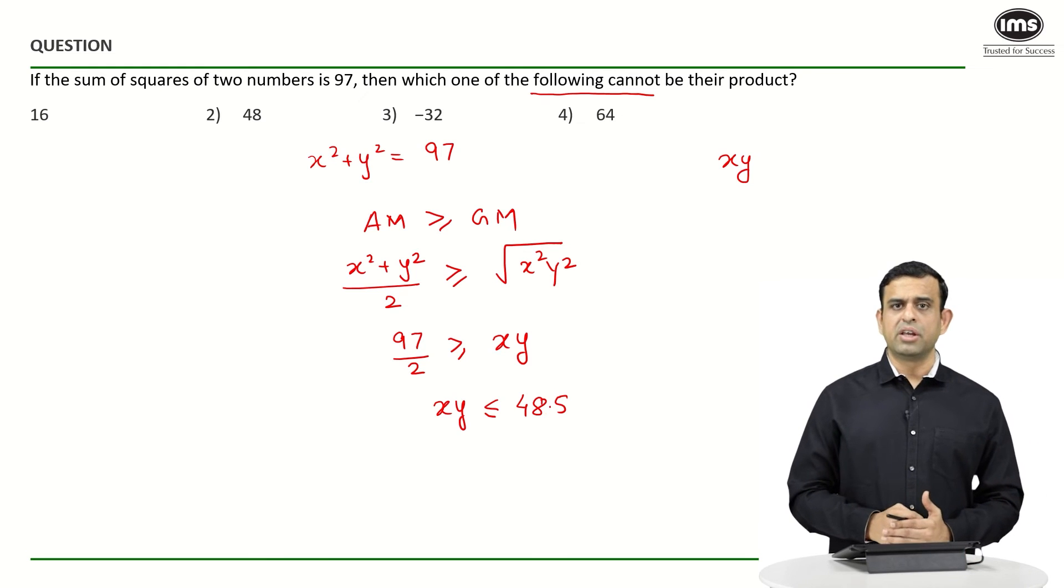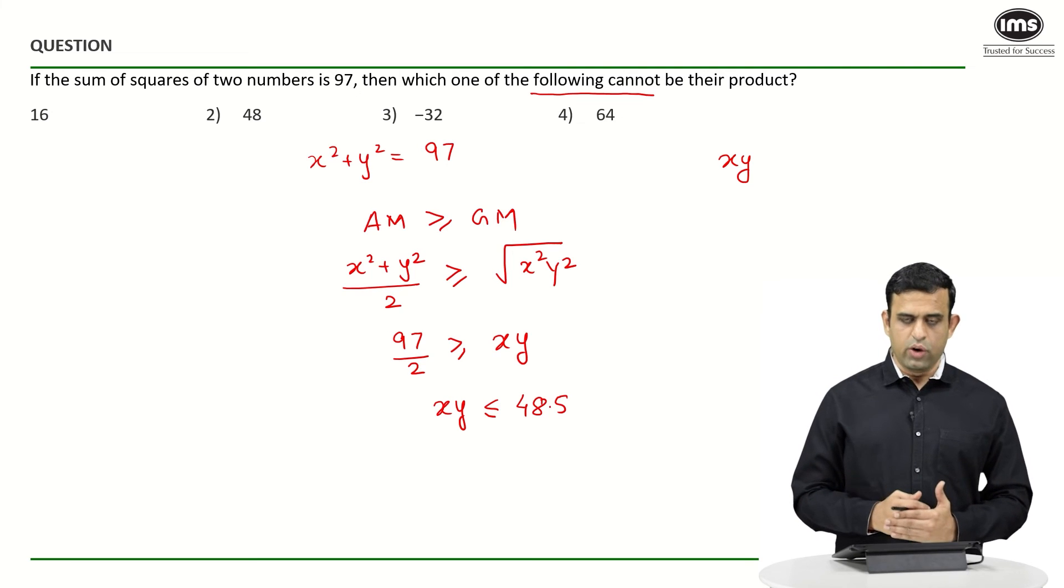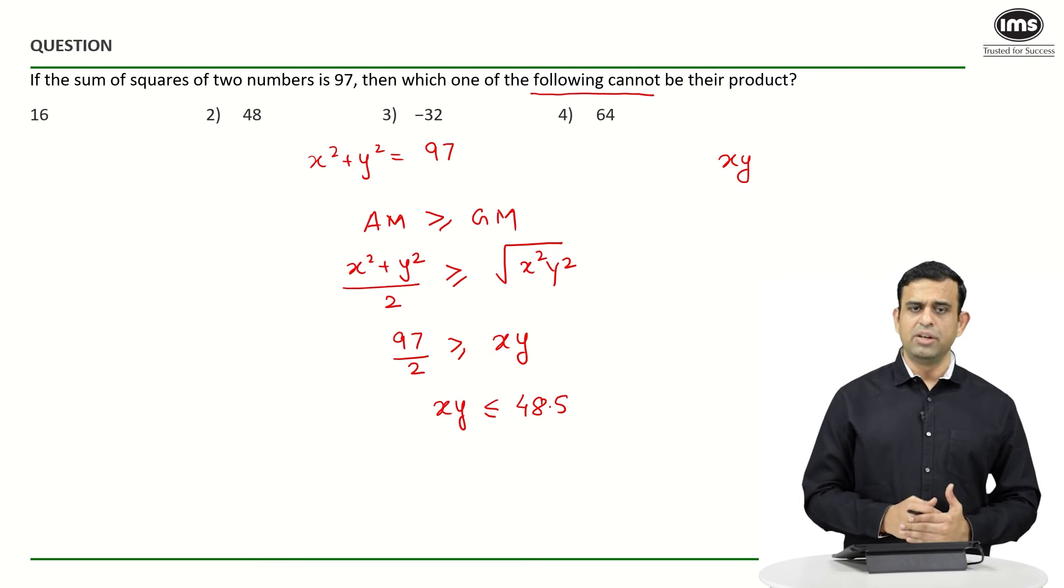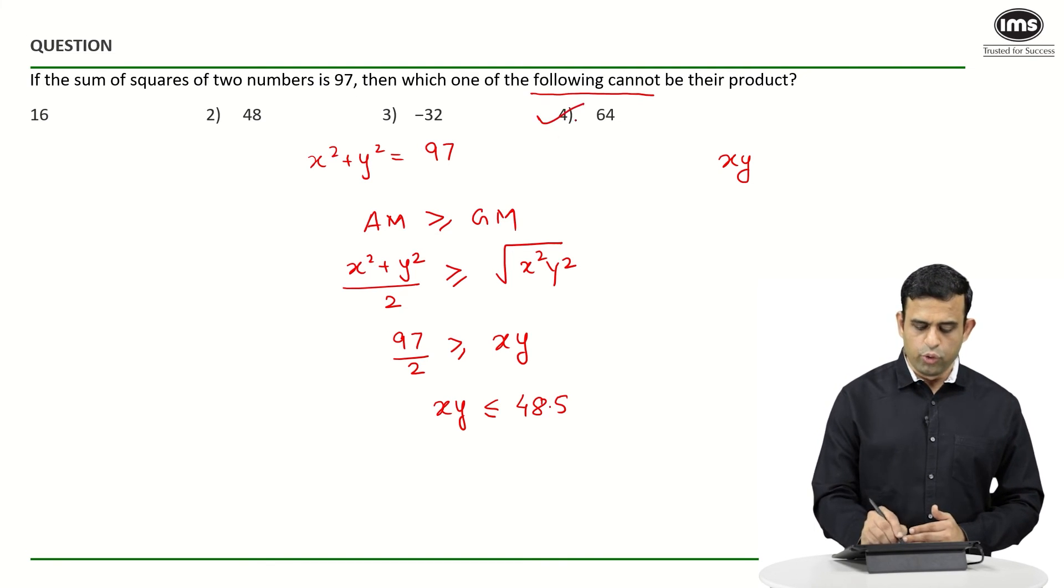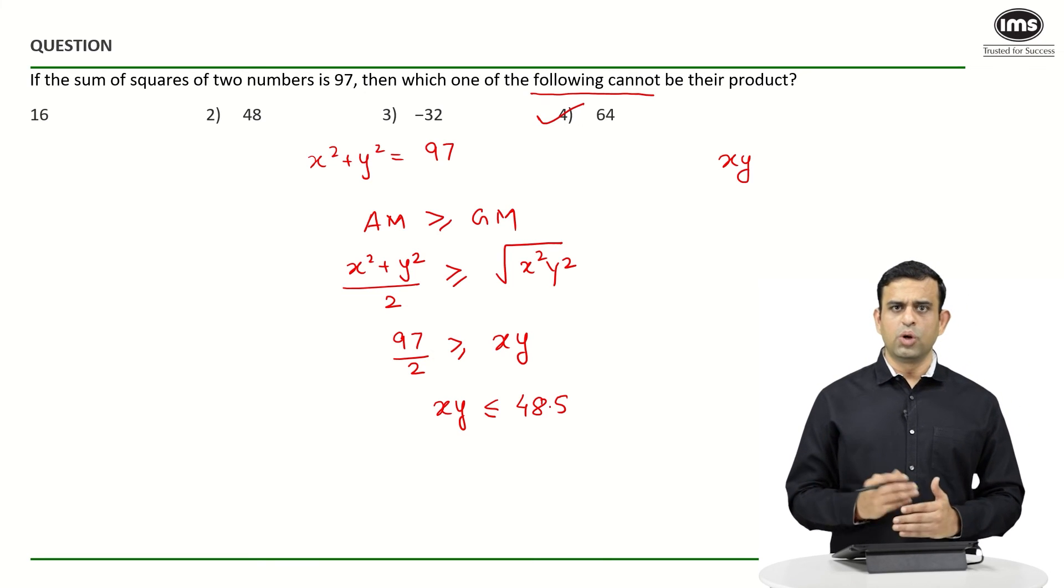So whatever be the case, the value of xy cannot exceed the number 48.5. And if I look at the option choices, one can safely mark option number 4 as the answer.